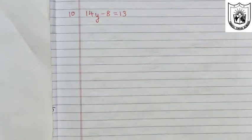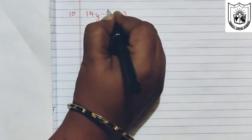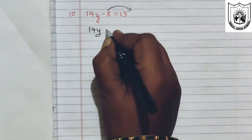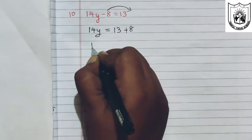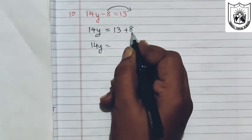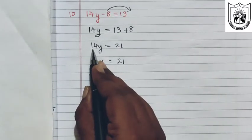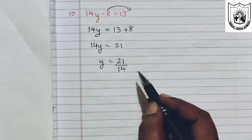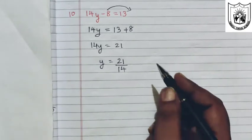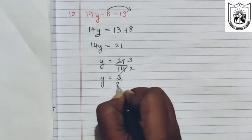Let us now solve the tenth problem: 14y minus 8 equals 13. We transpose negative 8 to the right hand side, so it becomes positive 8. So 14y equals 13 plus 8, which is 21. When 14 is transposed it becomes division. So y equals 21 upon 14, and since both are divisible by 7, y equals 3 upon 2.